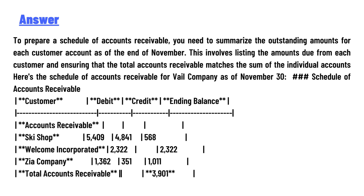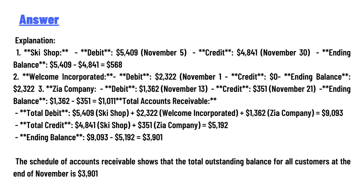Schedule of accounts receivable — pause the video and go to the calculation. The schedule of accounts receivable shows that the total outstanding balance for all customers at the end of November is $3,901. That is the correct answer to the question.